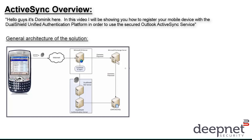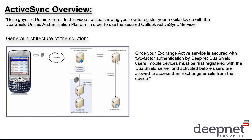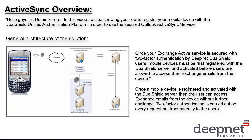This diagram illustrates the general architecture of the solution. Once your Exchange Active service is secured with two-factor authentication by DeepNet DualShield, users' mobile devices must be first registered with the DualShield server and activated before users are allowed to access their Exchange emails from the device. Once the mobile device is registered and activated, the user can access Exchange emails without further challenge. Two-factor authentication is carried out on every request but transparently to the users.